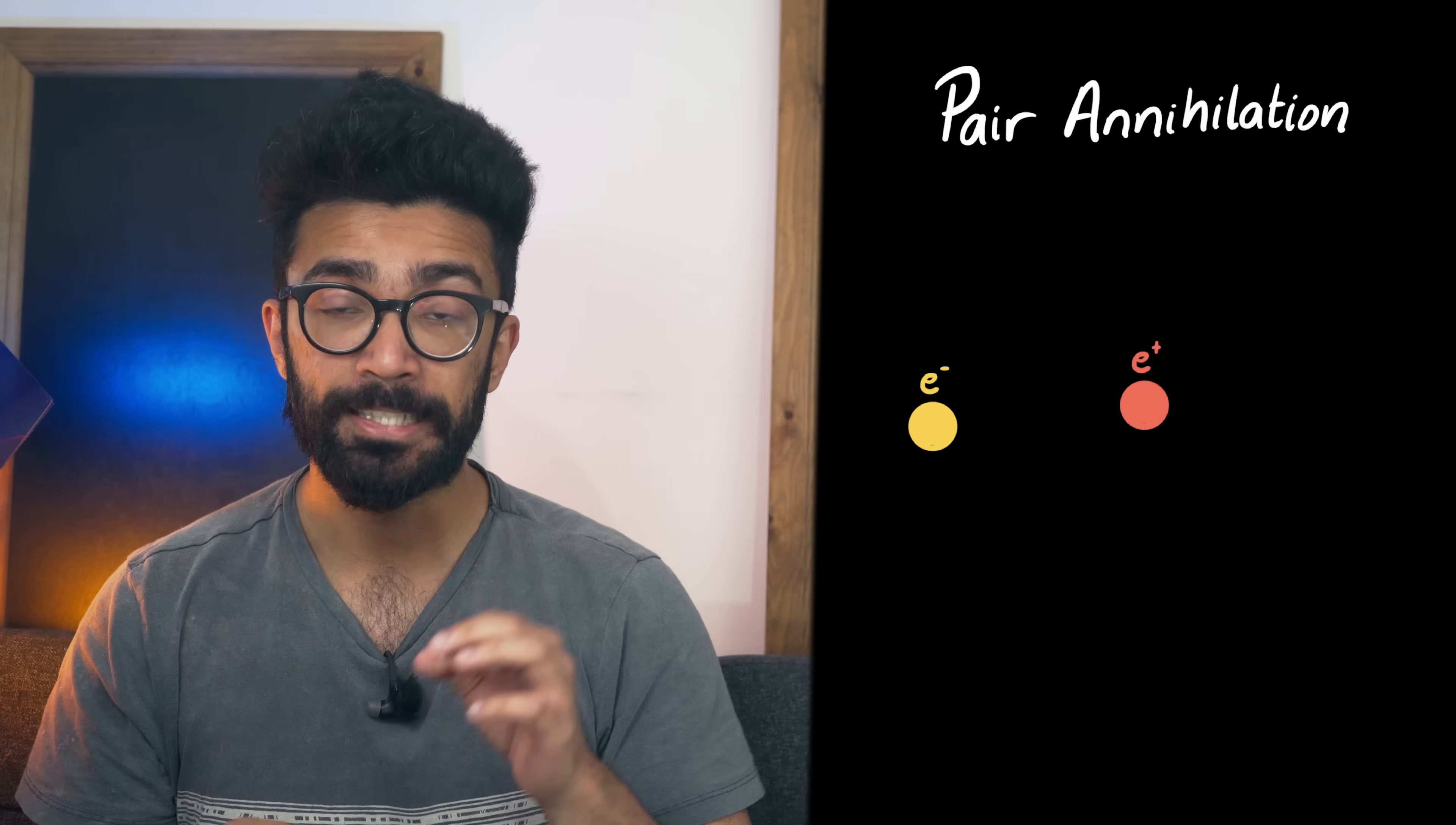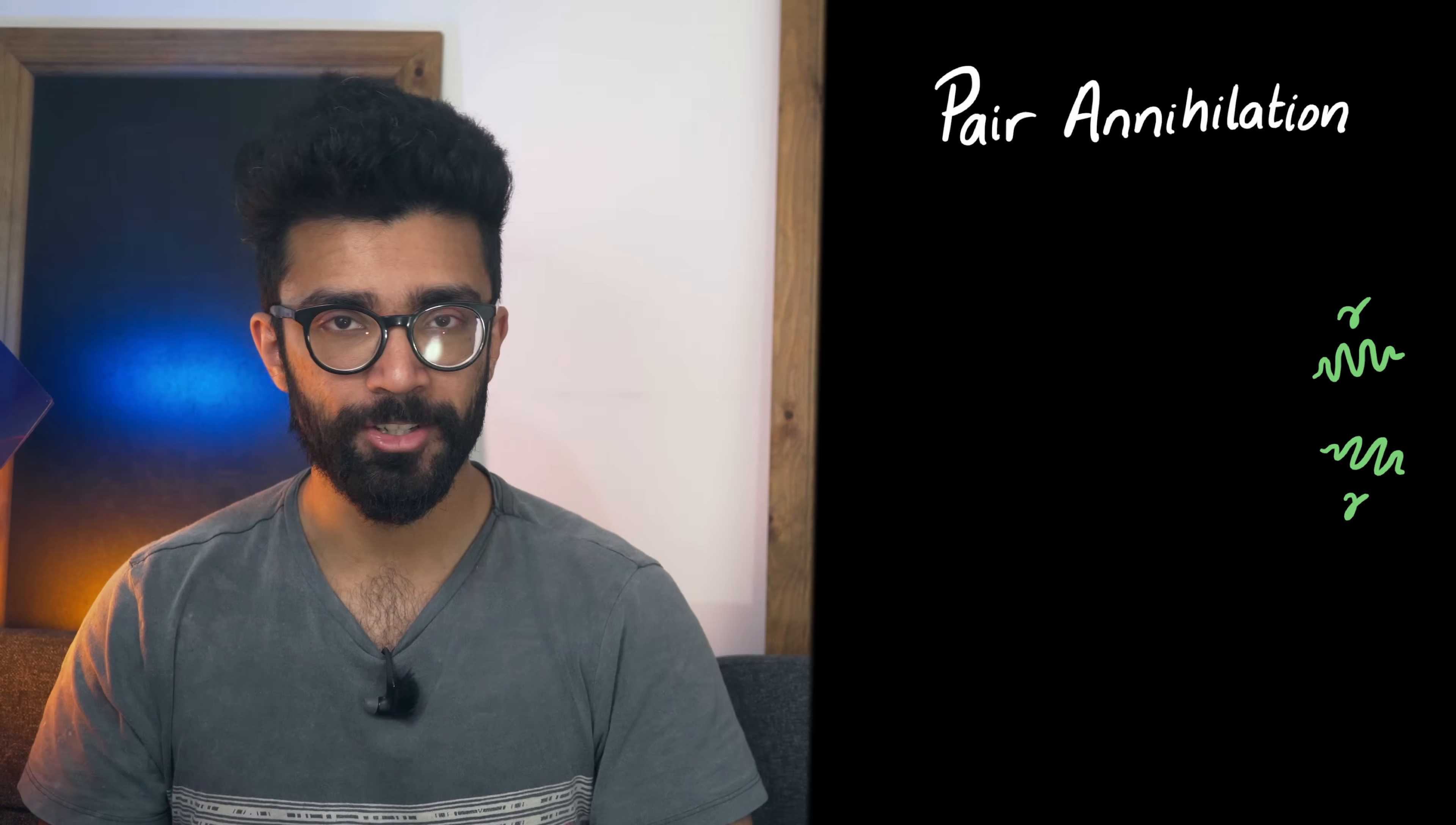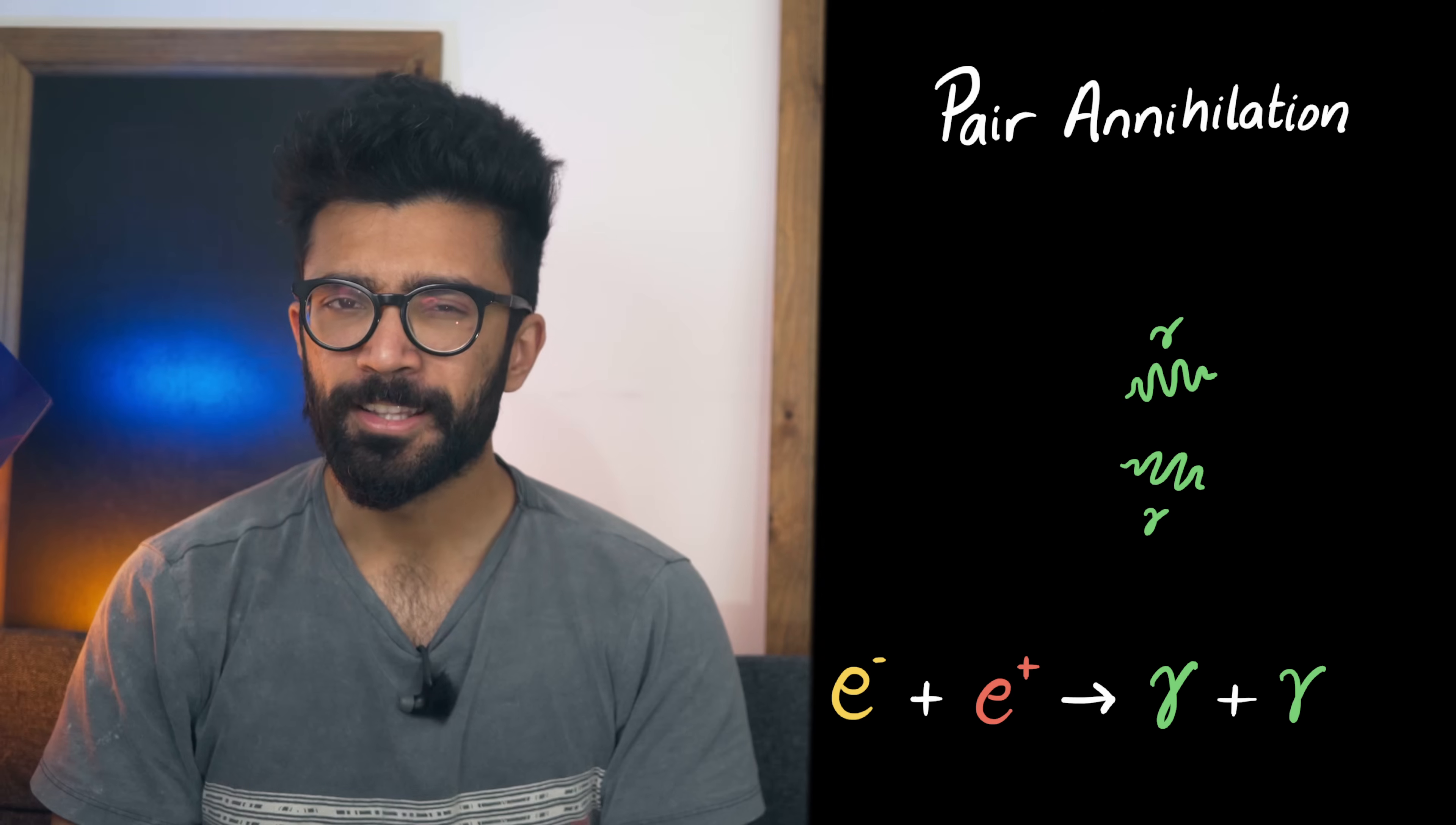Now we know that when a particle and its antiparticle collide they annihilate each other and two photons are released so that these photon energies add up to the total energies of the particles beforehand. We can write this interaction as electron plus positron results in the creation of two photons.